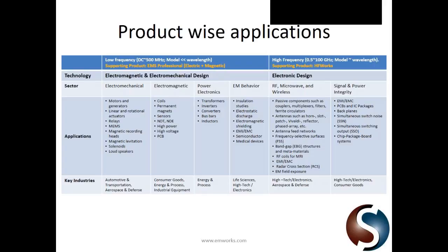Application areas include electromechanical design — actuators, motors, magnetic recording heads, solenoids, loudspeakers. You can design coils, permanent magnets, magnet arrays, and high voltage applications like insulators. EMS plays a role in power electronics where you can design transformers, inverters, and bus bars. You can also look at electromagnetic shielding properties and how well components are shielded.